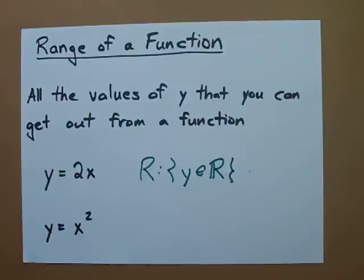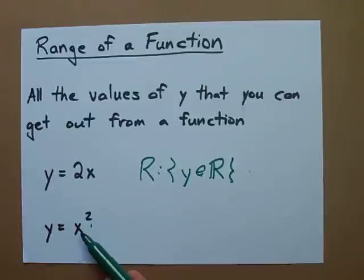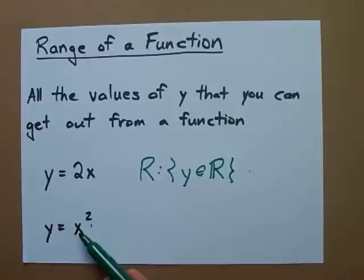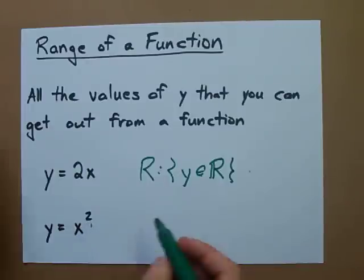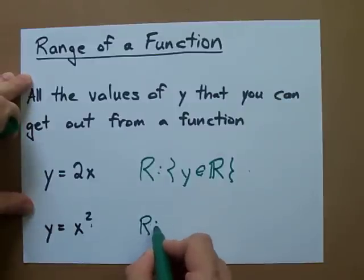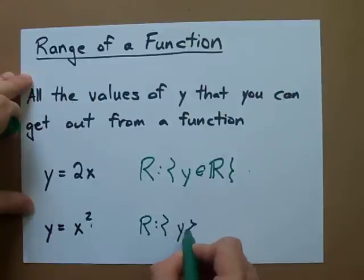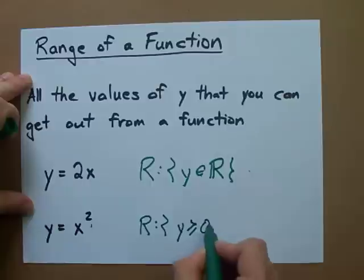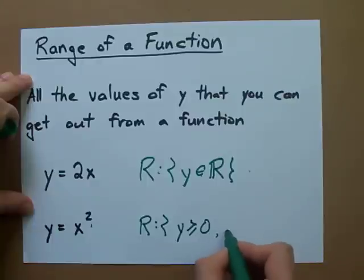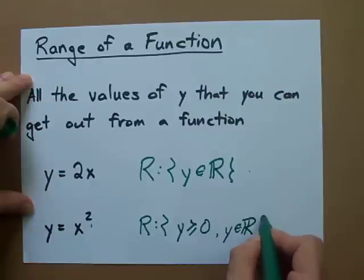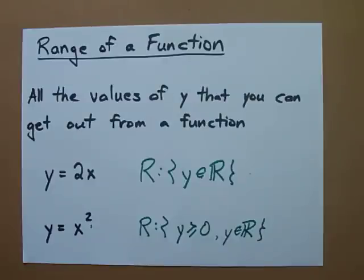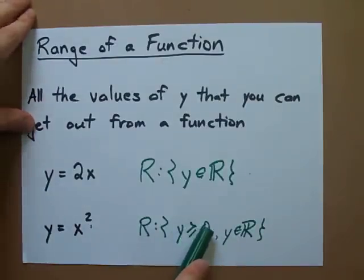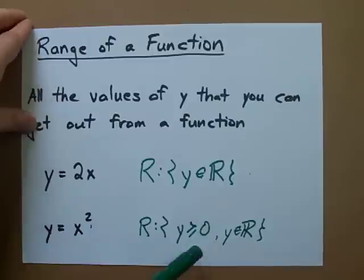Where you'll run into more complicated ranges is when you have squared terms. When you plug in a number for x and square it, it always becomes positive. Remember, negative 3 squared becomes positive 9. So the range of y = x² is that y will always be greater than or equal to zero. You can't get a negative number out of this function — y has to be either zero or positive.